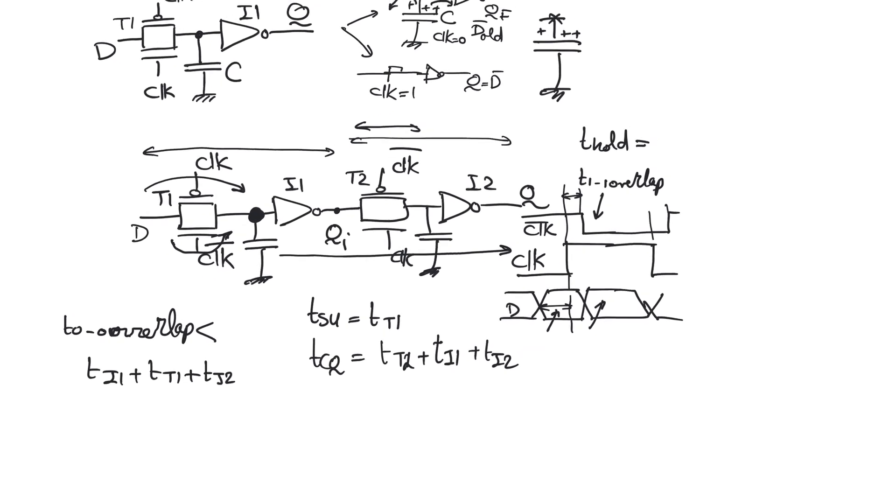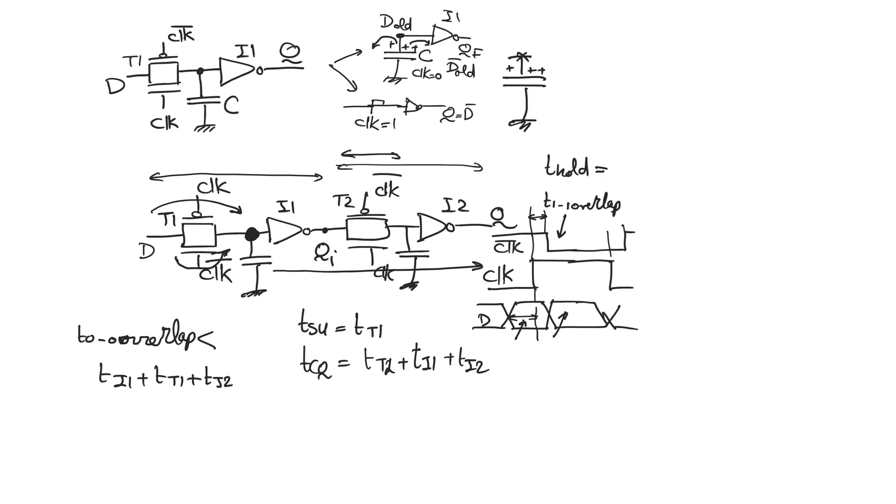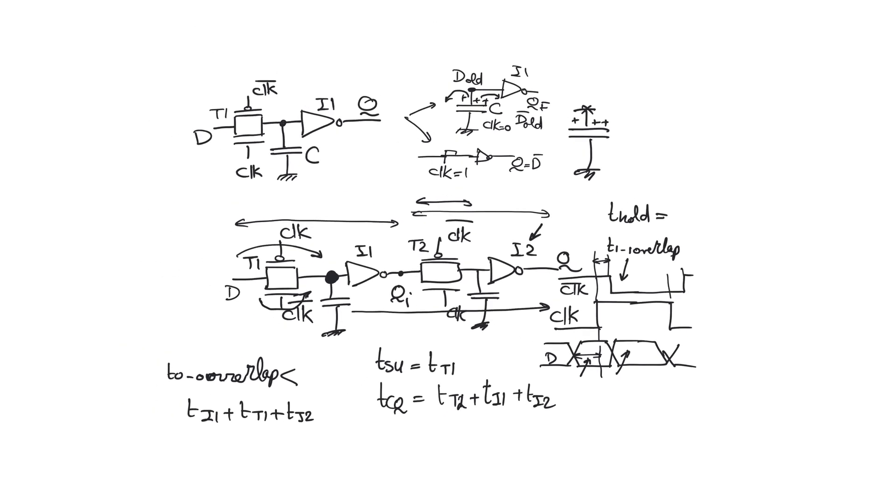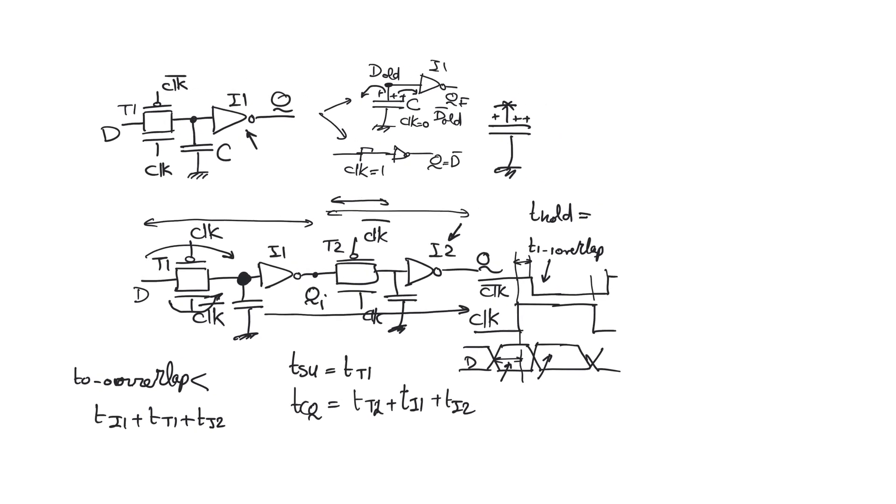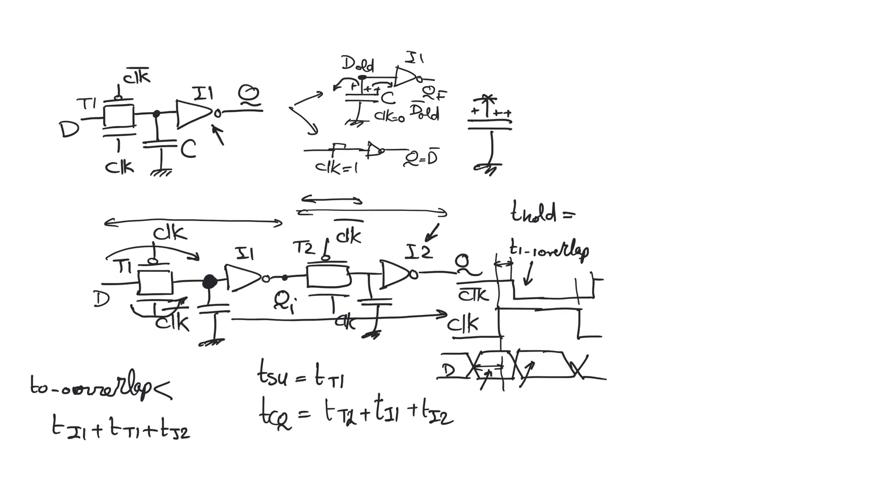There's a question about dynamic latches which we should answer, which is why do we need to use the inverters? Why use inverters I1 and I2? The inverter in the latch, the static inverter, provides drive. It allows the latch to have delay that is driven by this register.